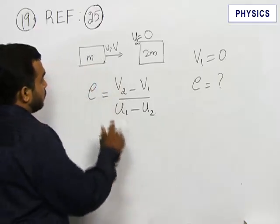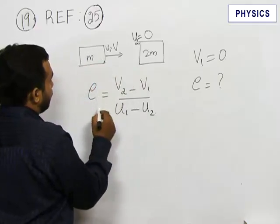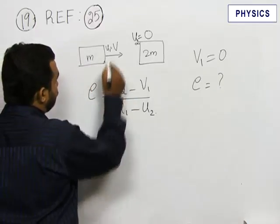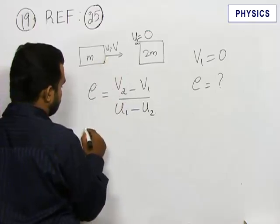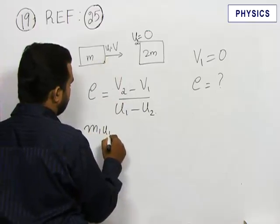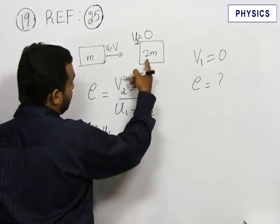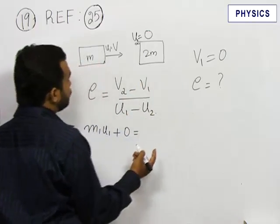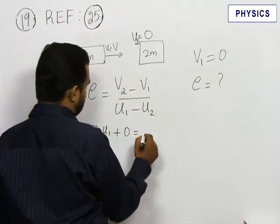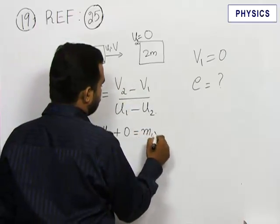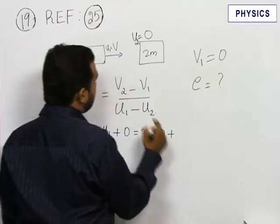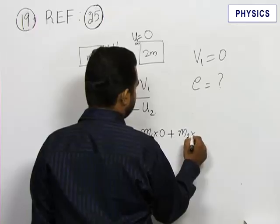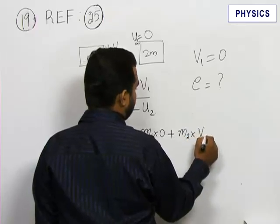In this case by momentum consideration we can find the velocities. We know the velocity of body 1 which is the initial velocity. So m1u1, the second body is at rest plus 0 equals, after collision the lighter body comes to rest, that means m1 into 0 and the heavier body moves which is m2 with a velocity v2.